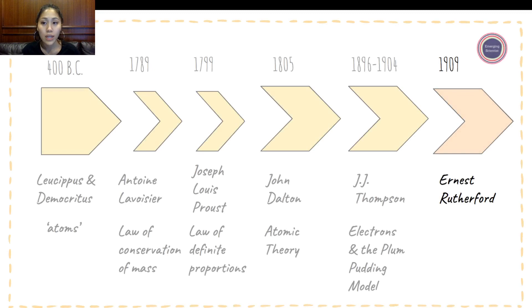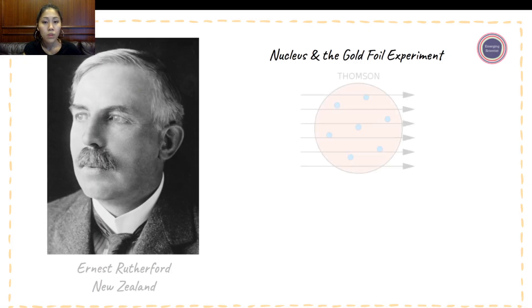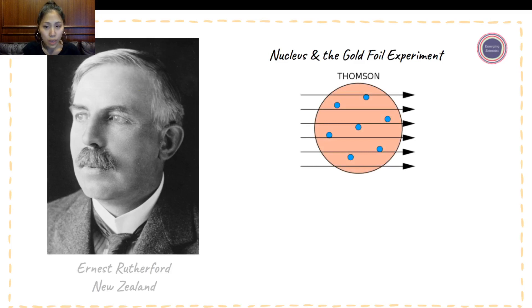Ernest Rutherford in 1909 built upon JJ Thompson's idea of the plum pudding model, but found something else in an atom. He found the nucleus through the gold foil experiment. Thompson, through his cathode ray tube experiment, was able to find some negatively charged particles that he called electrons. And these are dotted as blue.